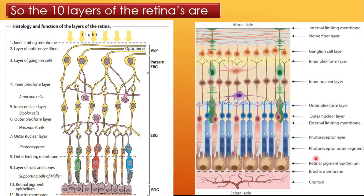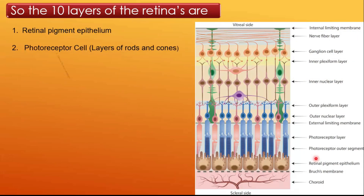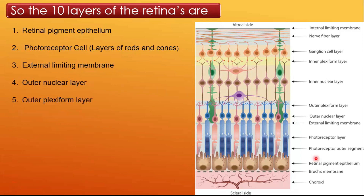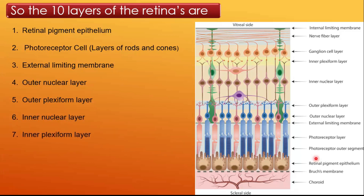Retinal pigment epithelium; photoreceptor layer, that is the layer of rods and cones; external limiting membrane; outer nuclear layer; outer plexiform layer; inner nuclear layer; inner plexiform layer; ganglion cell layer; nerve fiber layer; and internal limiting membrane.